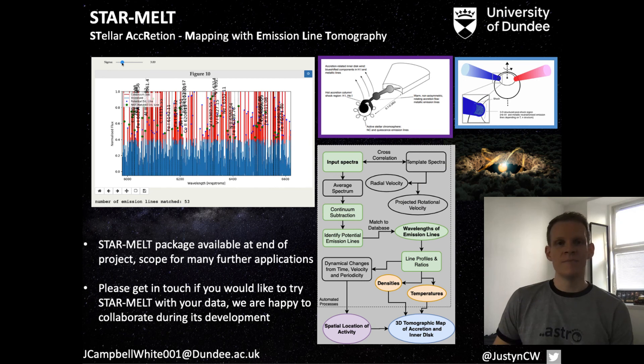So in summary, star melt allows us to automatically identify and analyze emission lines from all kinds of astronomical spectra that contain these lines. In the case of accretion dynamics for young stars, being able to obtain these physical properties for different lines and see how they change across the observations is what allows us to build up these tomographic maps of different stars, which we'll be investigating in much more detail over the coming years.